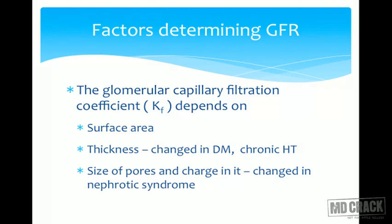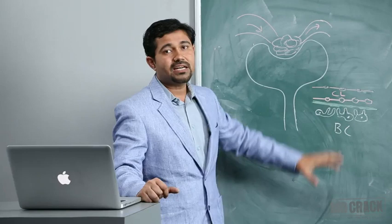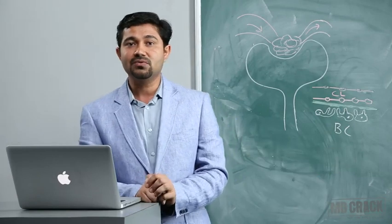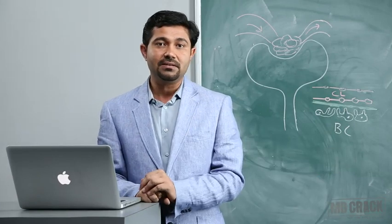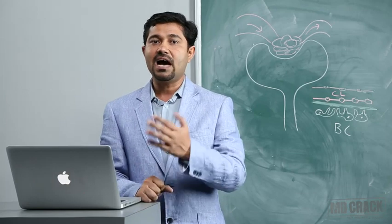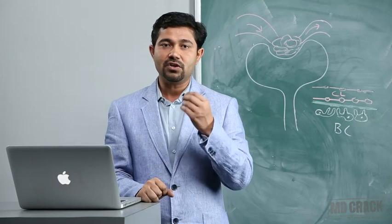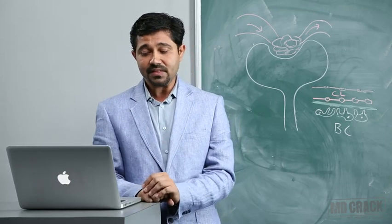The glomerular capillary membrane becomes thick in conditions such as diabetes mellitus and chronic hypertension. Remember these two conditions - diabetes and hypertension are most important, accounting for 70% of cases of renal failure. They primarily act on the glomerular capillary membrane.